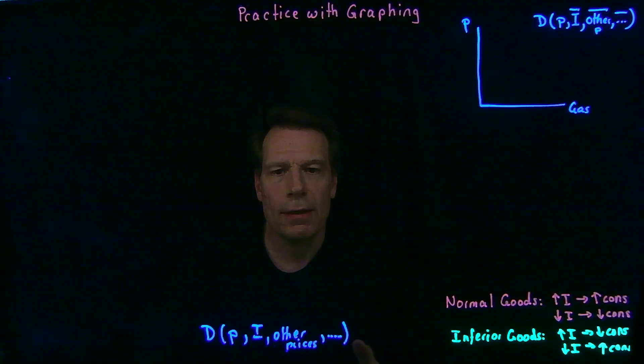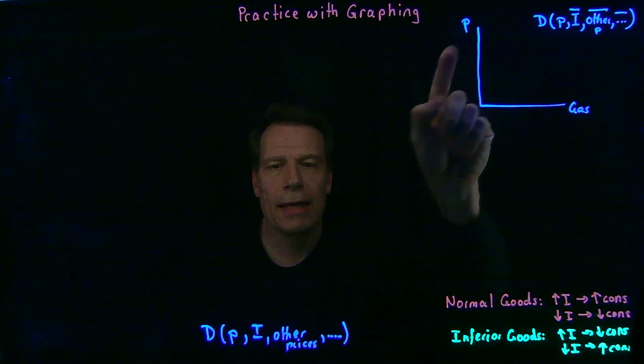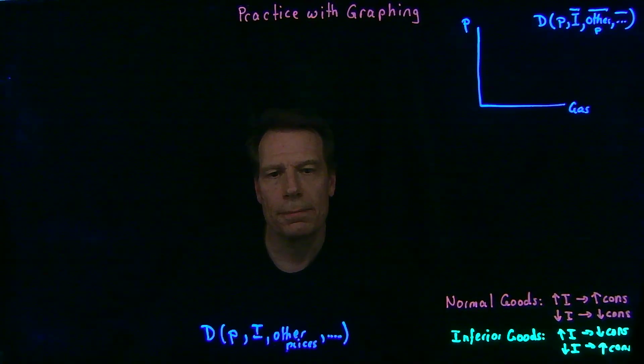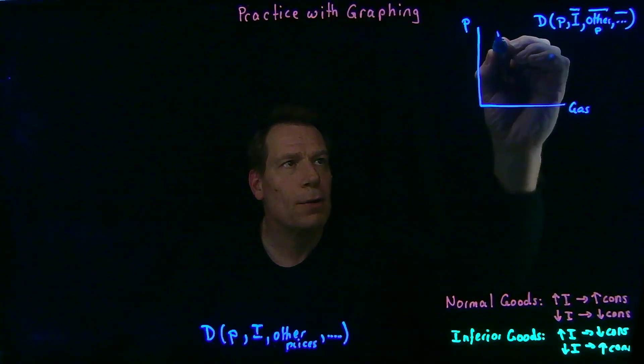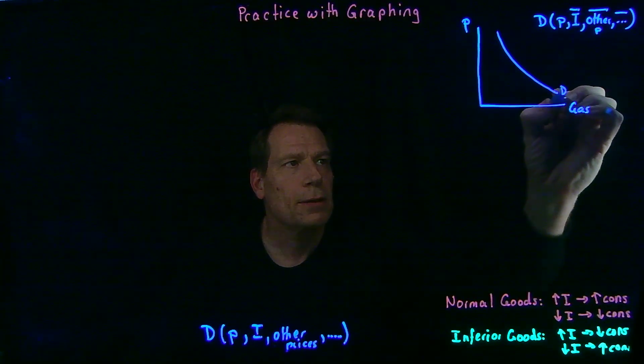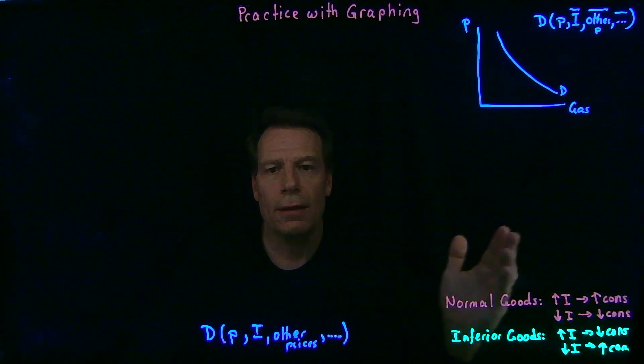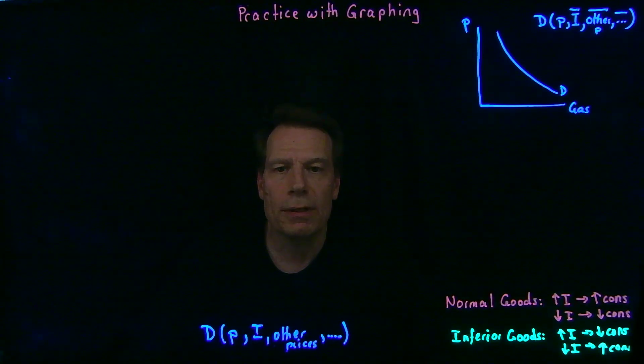The only thing we allowed to vary was what we put on the vertical axis, the price of the good. And we then got our downward sloping demand curve that told us the higher the price gets, the lower the quantity that we'll demand.